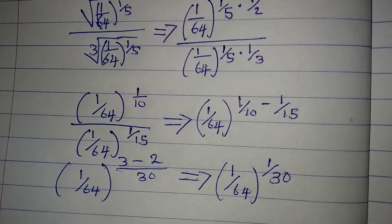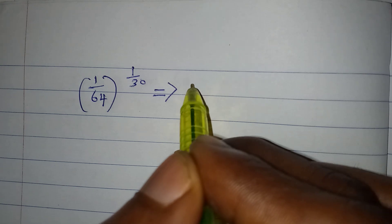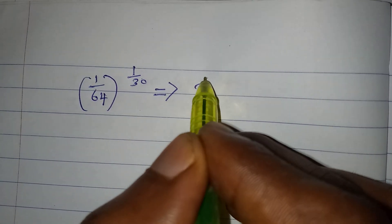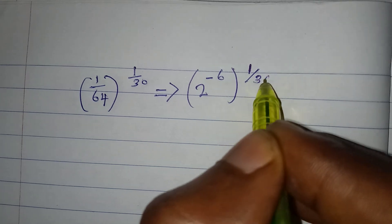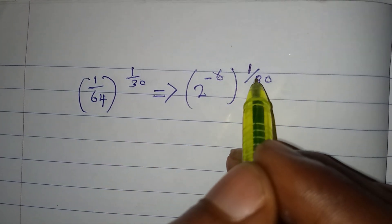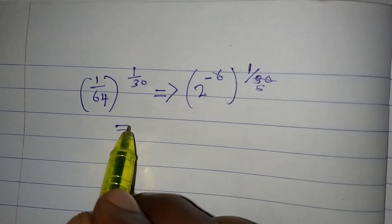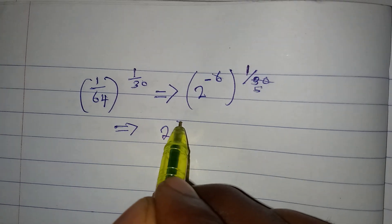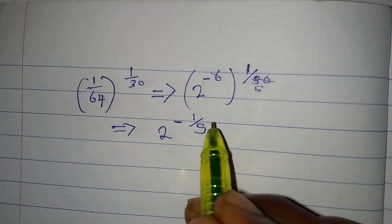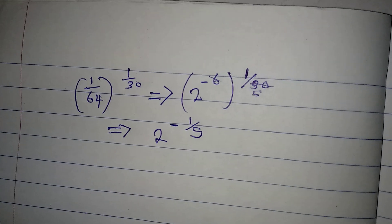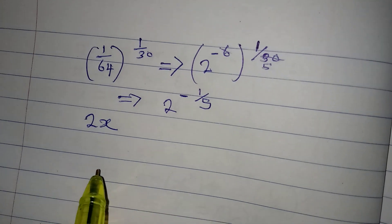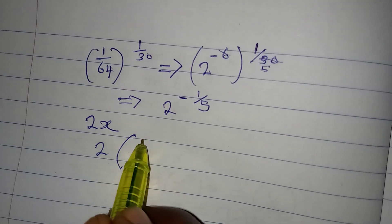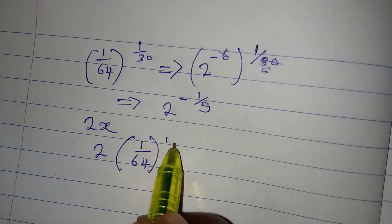Reducing this: 1/64 is the same as 2 to the power of negative 6, so we have (2^(-6)) to the power of 1/30. Multiplying the powers: negative 6 over 30 simplifies — 6 goes into 30 five times — giving 2 to the power of negative 1/5. That is the left-hand side result. On the right-hand side, we have 2x, which is 2 multiplied by (1/64)^(1/5).